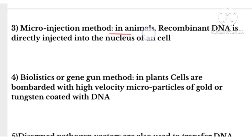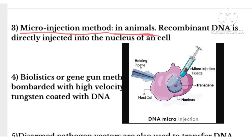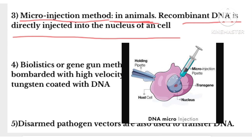The next method is used for animal cells. To make animal cells competent, we use the microinjection method. In this method, the recombinant DNA is directly injected using a fine needle into the nucleus of the animal cell. So the recombinant DNA is delivered directly to the nucleus using micro injection.